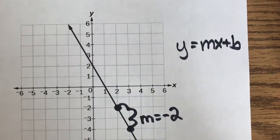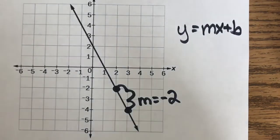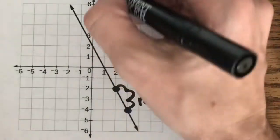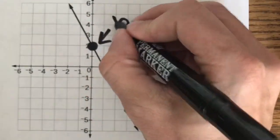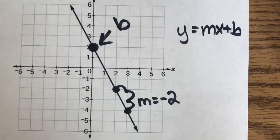My y-intercept is the spot where my line crosses the y-axis, which appears to be 2. So my y-intercept is 2. My b is 2.